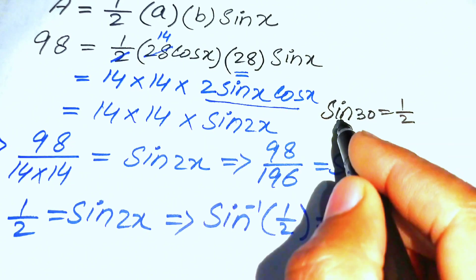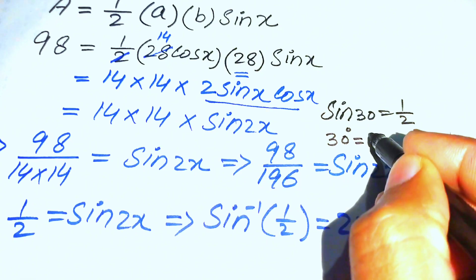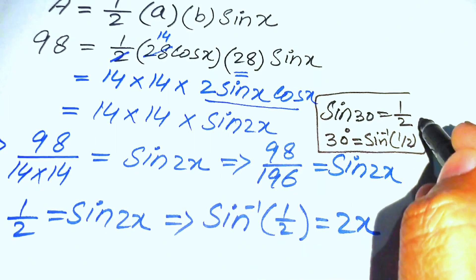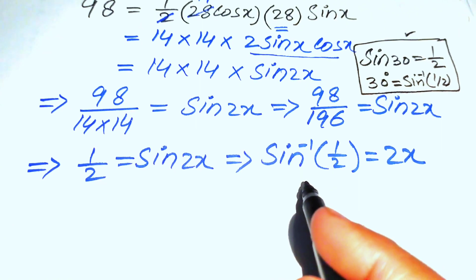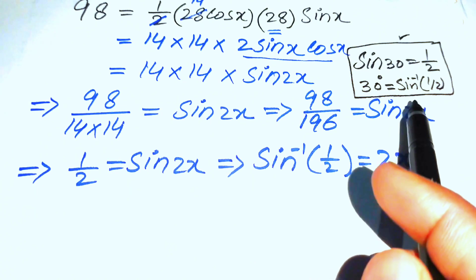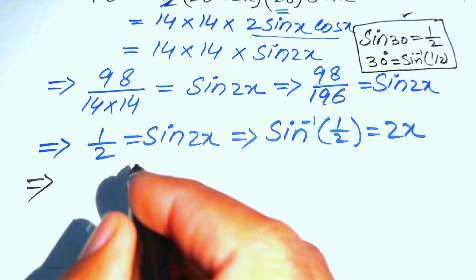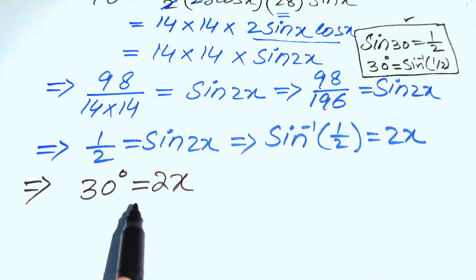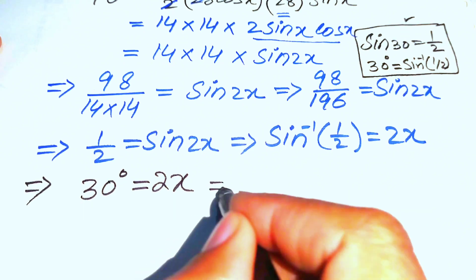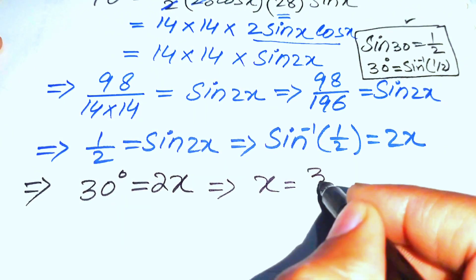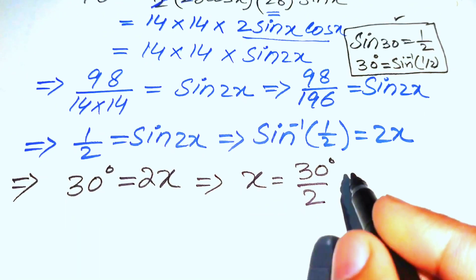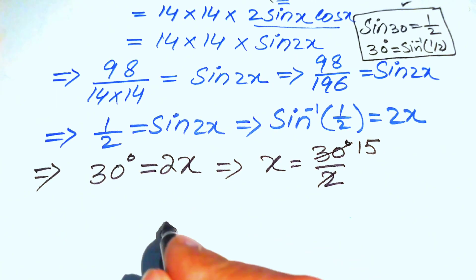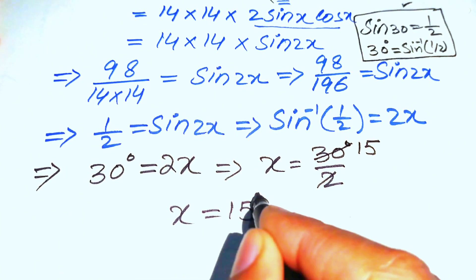We know that sin(30°) = ½, so sin⁻¹(½) = 30°. Substituting this value, we get 30° = 2x. Dividing both sides by 2, we obtain x = 30°/2 = 15°. So the value of x is 15 degrees.